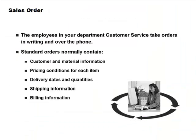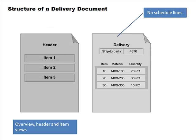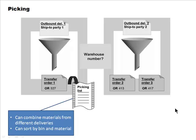We're looking at the sales order, which contains customer and material information, pricing conditions for each item, delivery dates and quantities, shipping information, billing information — things like that. The standard things you use in the overview, header, and item view of the document.